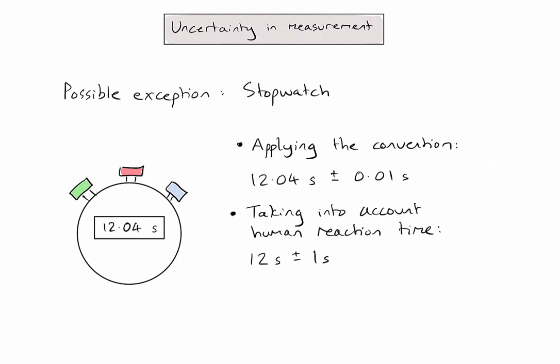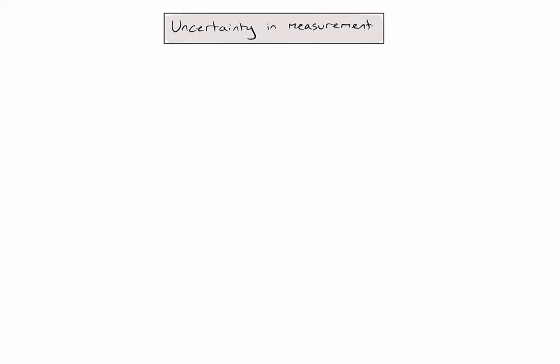Let's now consider the key points from this video. Firstly, let's look at analogue equipment. And when making our measurement, remember that you're allowed to estimate to half of the smallest gap when recording your value. The uncertainty associated with this is always going to be plus or minus half of the smallest division on that piece of equipment.